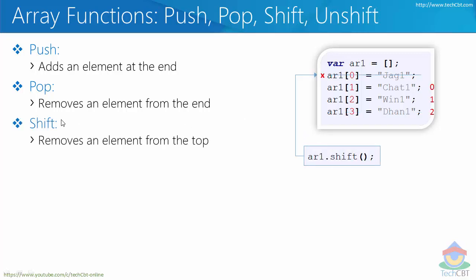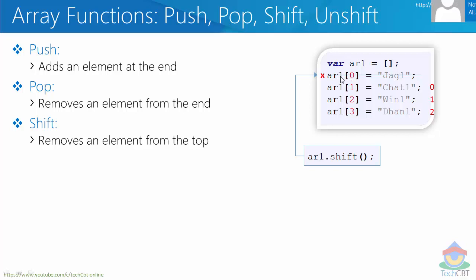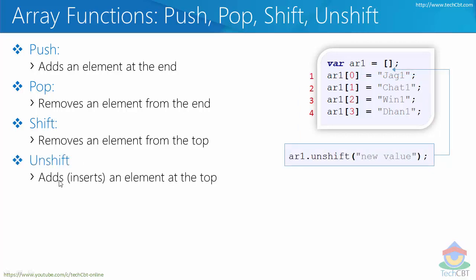The next one is shift, which is very similar to pop except that it removes elements from the top — the first location is removed. Once removed, the rest of the indexes are adjusted: 1 becomes 0, 2 becomes 1, and 3 becomes 2. All of that shuffling happens automatically the moment we call shift, so all array locations shift toward the top once the first element is removed.